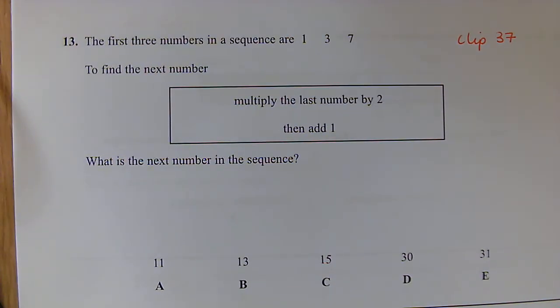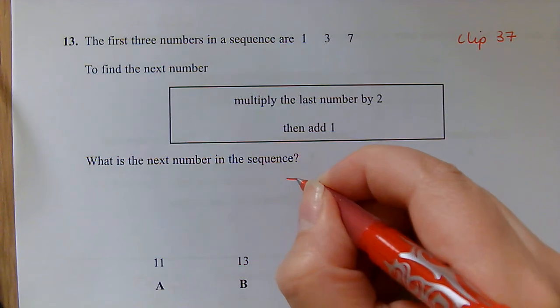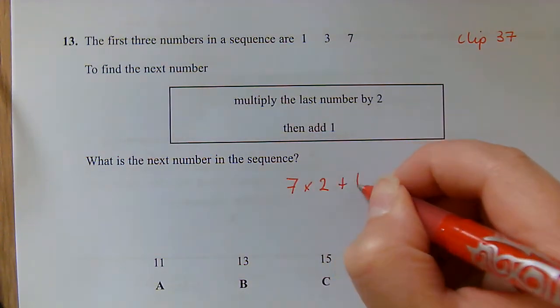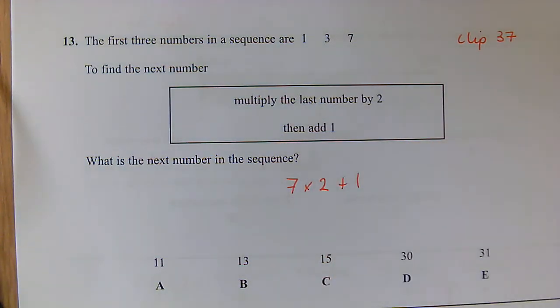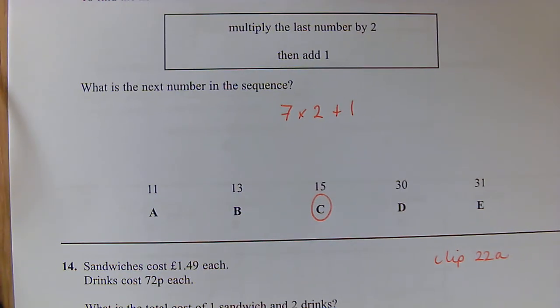Question 13: First three numbers in a sequence are 1, 3, 7. To find the next number, we're multiplying the last number by 2 and then adding 1. So we want to know the next number in the sequence. We're going to do our 7 multiplied by 2 and then add on 1. So 7 multiplied by 2 is 14, add the 1 to give us 15, which is C.